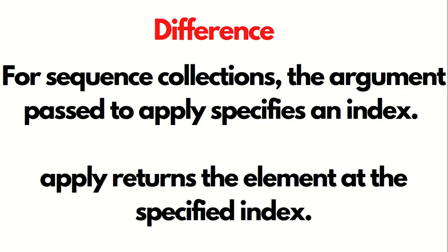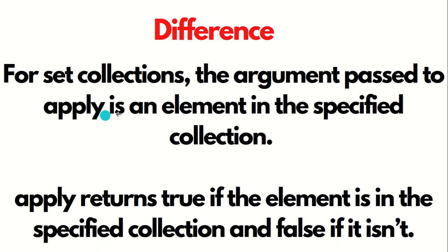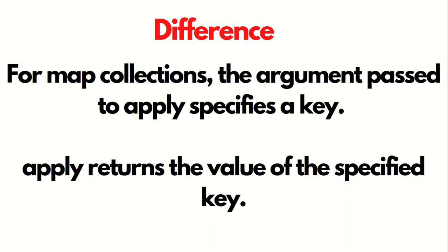If we talk about the difference between these three types — SEQ, set, and map — for sequence collections, the argument passed to apply specifies an index, and apply returns the element at the specified index. For set collections, the argument passed to apply is an element in a specified collection; apply returns true if the element is in the collection and false if it's not. For map collections, the argument passed to apply specifies a key, and apply returns the value of the specified key.